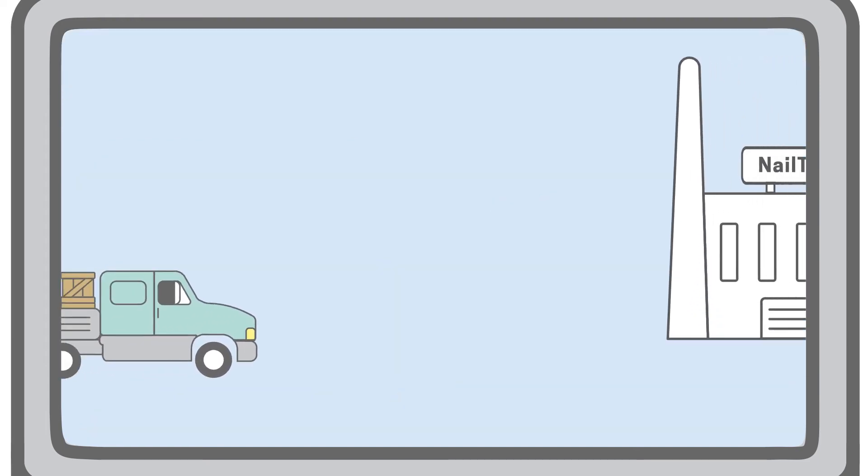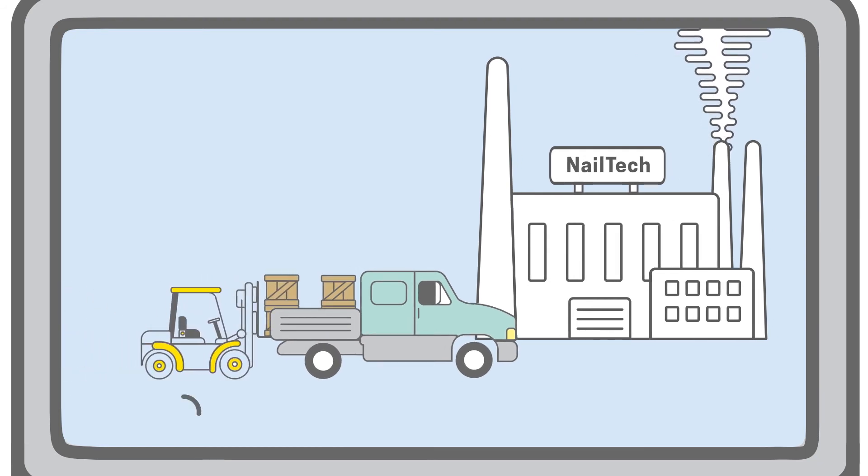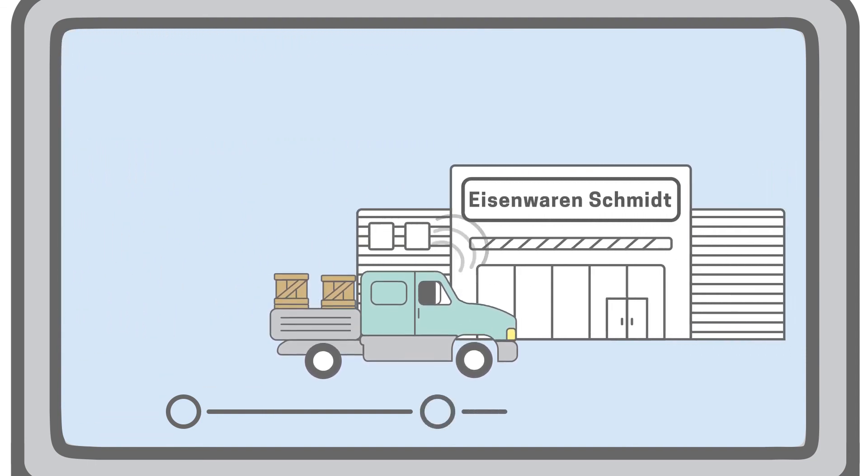During the execution of the transport, a number of events relevant to the contract happen, such as the takeover of the goods by Kaisertransporter and the delivery to Eisenwarenschmidt.